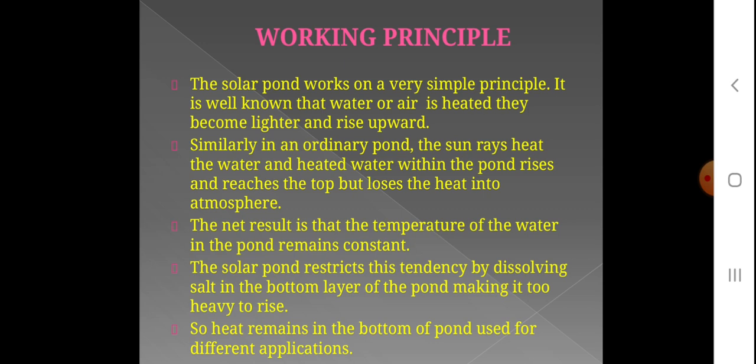The solar pond restricts this tendency by dissolving salt in the bottom layer of the pond, making it too heavy to rise. In the solar pond, the water is salty. When the solar pond absorbs sunlight, the salty water at the bottom heats up but cannot rise because it is heavy.